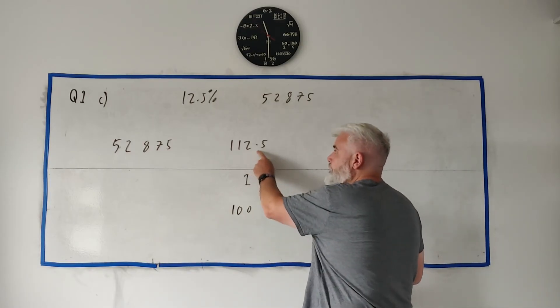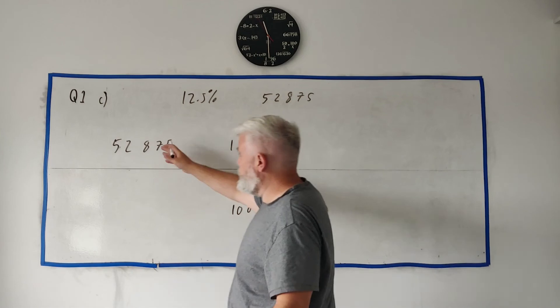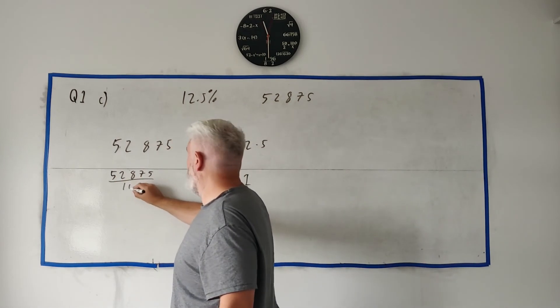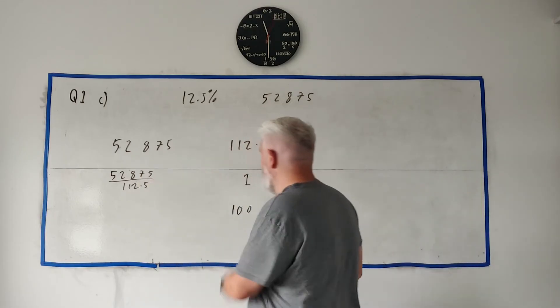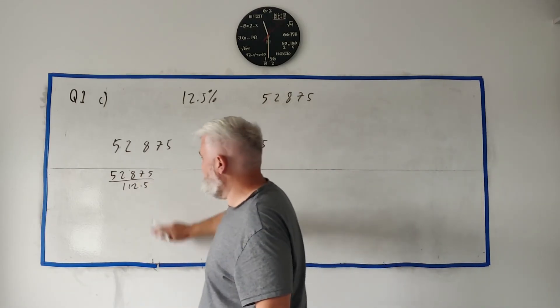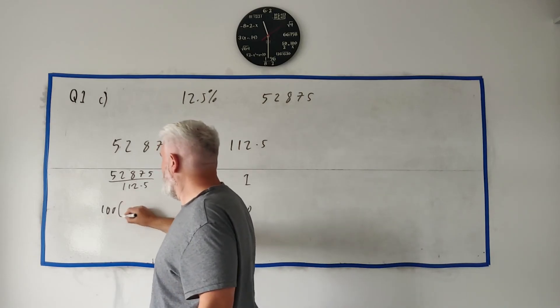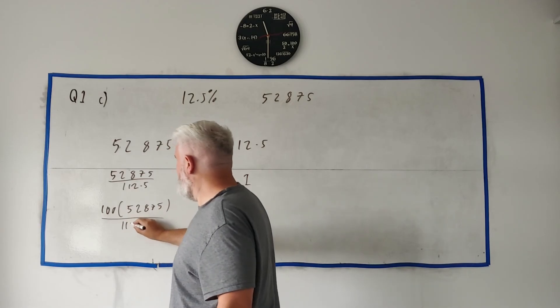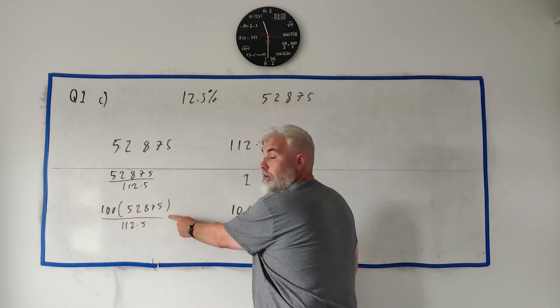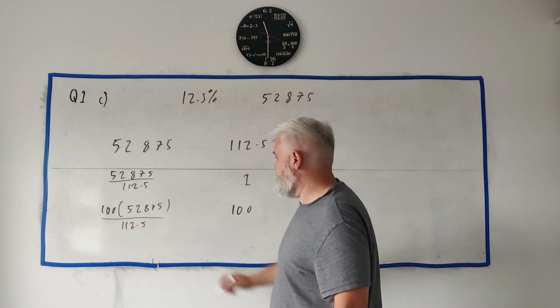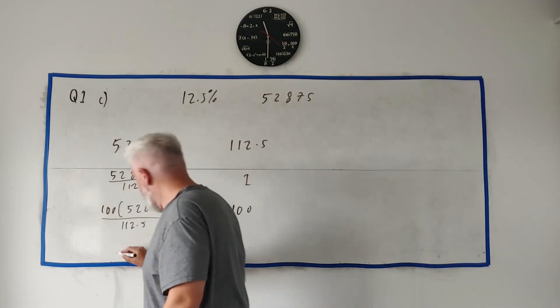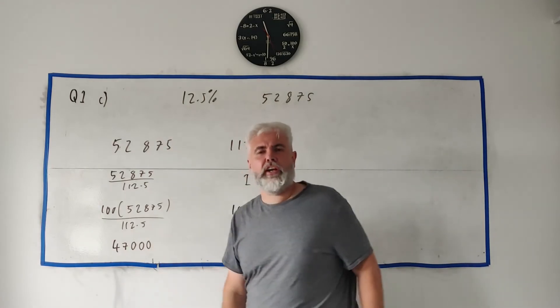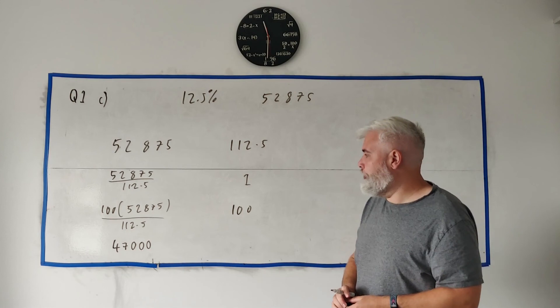How do we get from this to 1? Divide by 112.5, so you have to be fair and divide this by 112.5. How do we get from 1 to 100? Multiply by 100, so you have to be fair multiply this by 100. You go ahead and put all this in the calculator, again if you know what you're doing you can type this in straight away and get your answer. This answer comes out as 47,000.